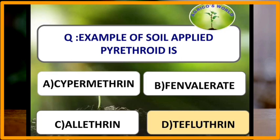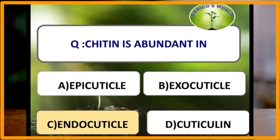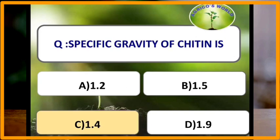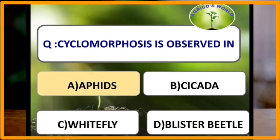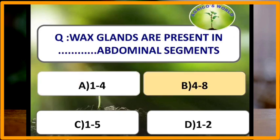An example of soil-applied pyrethroid is tefluthrin. Tefluthrin is an example of soil-applied pyrethroid. Chitin is abundant in the endocuticle. The specific gravity of chitin is 1.4. Cyclomorphosis is observed in aphids.